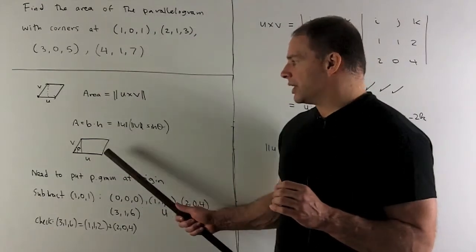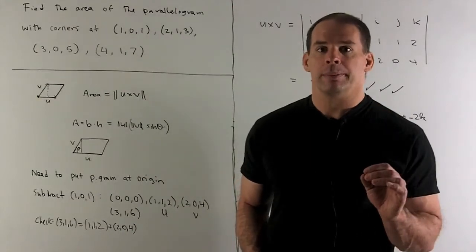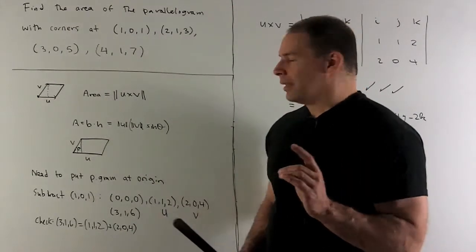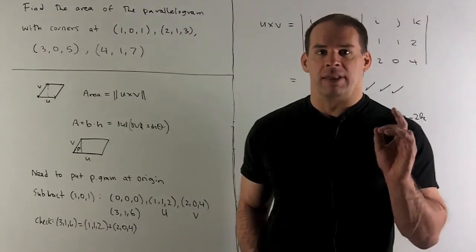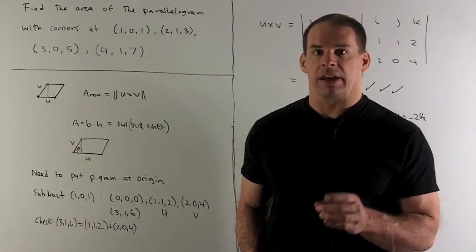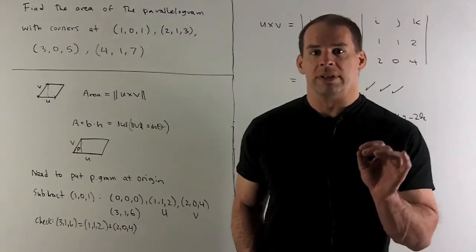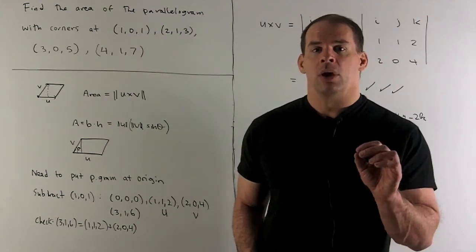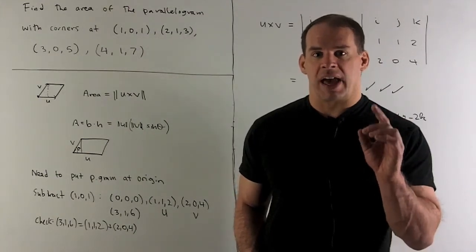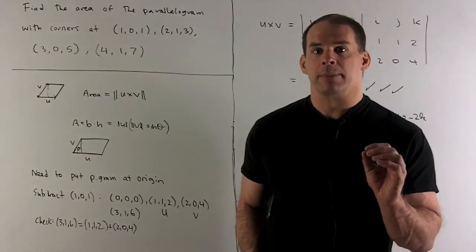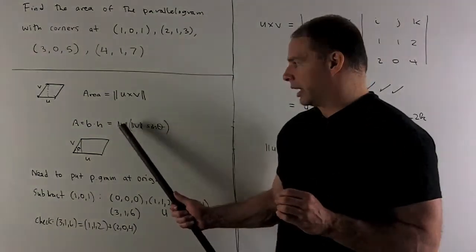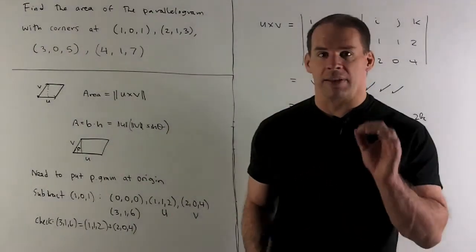Our base is going to be the length of u. If I put the angle theta in, then the height is just going to be the length of v times sine theta. When we define the cross product, one of the defining characteristics is that the length of the vector that comes out is given by length u, length v, sine theta.